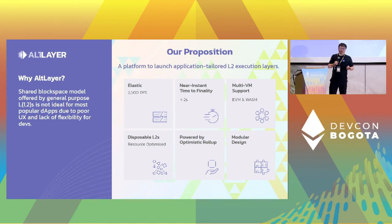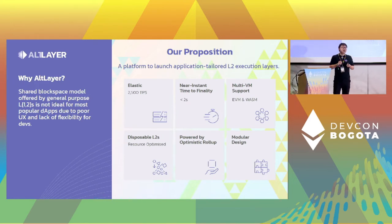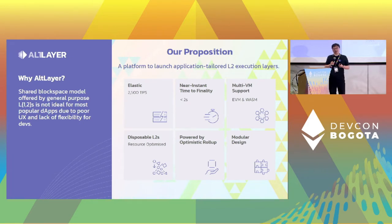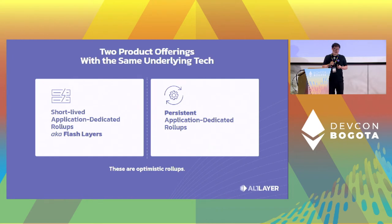Some metrics: at Alllayer we can provide a very high throughput execution environment with very low transaction fees and very fast finality. With some recent updates, we can achieve sub-second block time and even tens of thousands of transactions per second. Meanwhile, we also support both EVM and WASM.